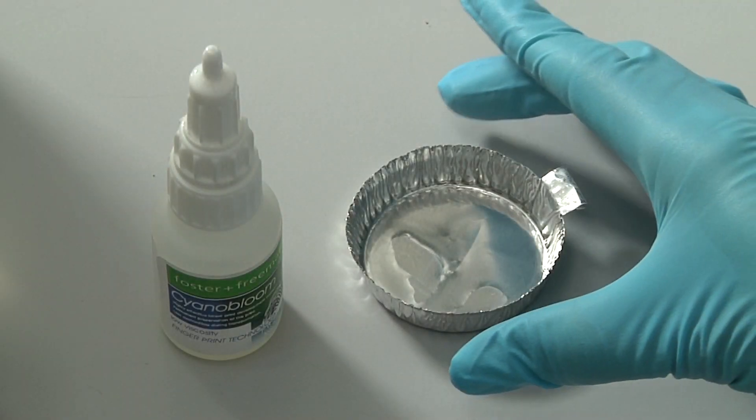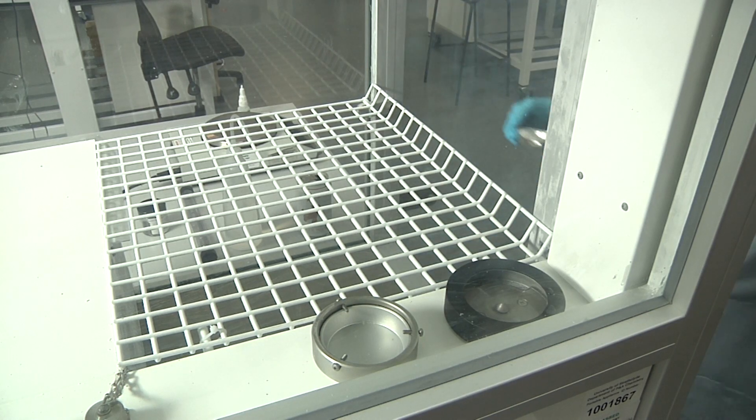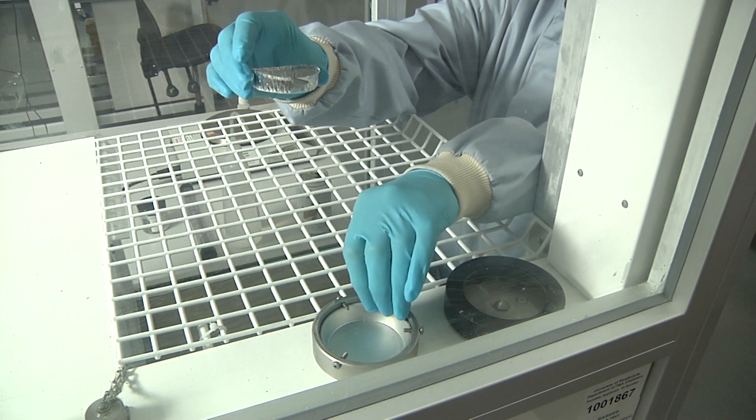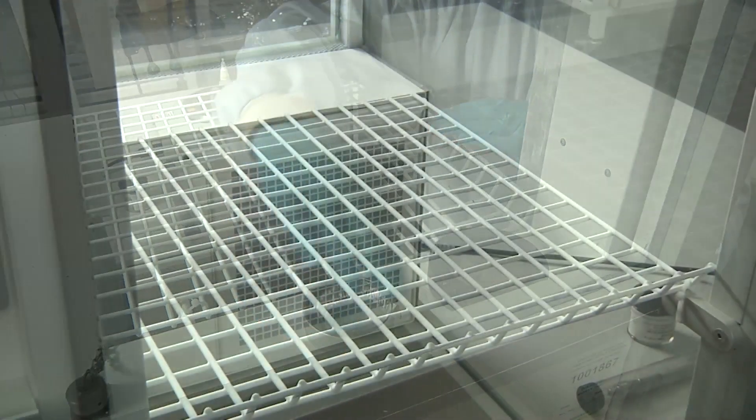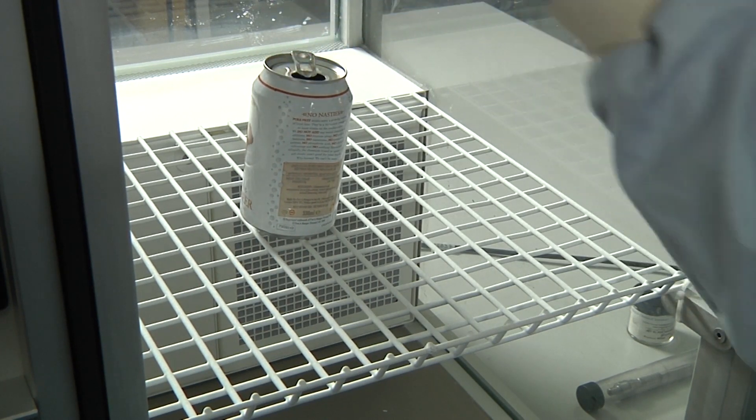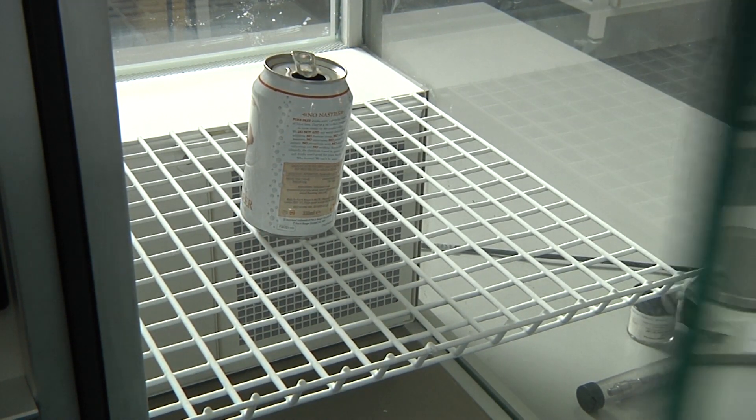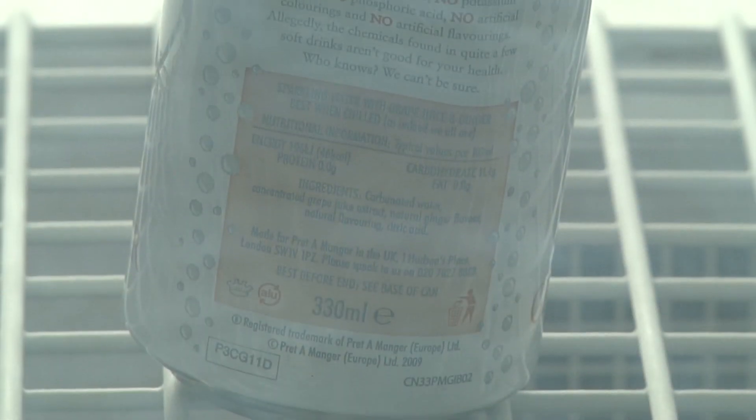Cyanoacrylate or superglue fuming is another technique which is used for non-porous surfaces. The vapour given off from the superglue reacts with some finger marks. Items for enhancement are placed inside a specialist cabinet that controls humidity and allows superglue to vaporize. The vapor produces a white crystalline substance on the finger mark ridges.